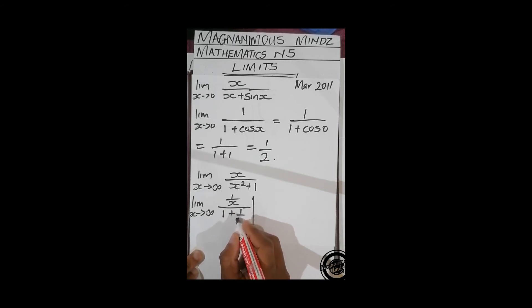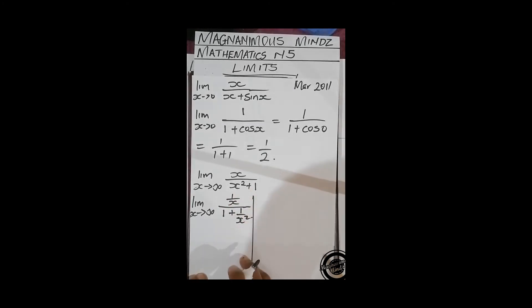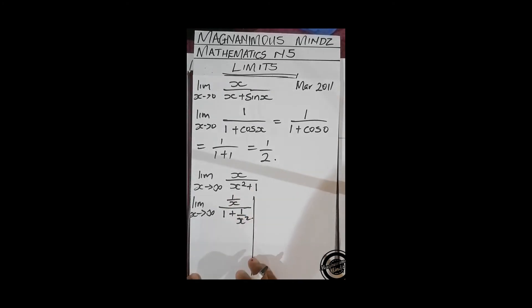And if we directly substitute, this is going to 0, this is also going to 0. So we get 1 over infinity, 1 plus 1 over infinity². That's going to be 0 over 1 which gives us 0.